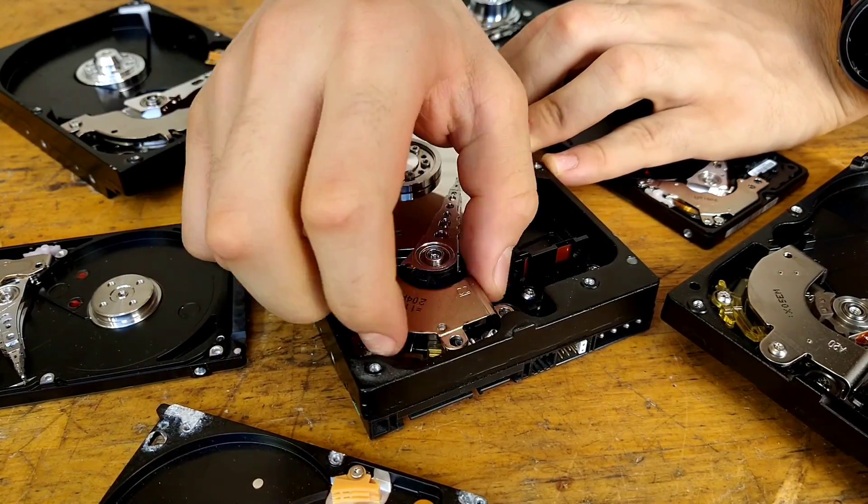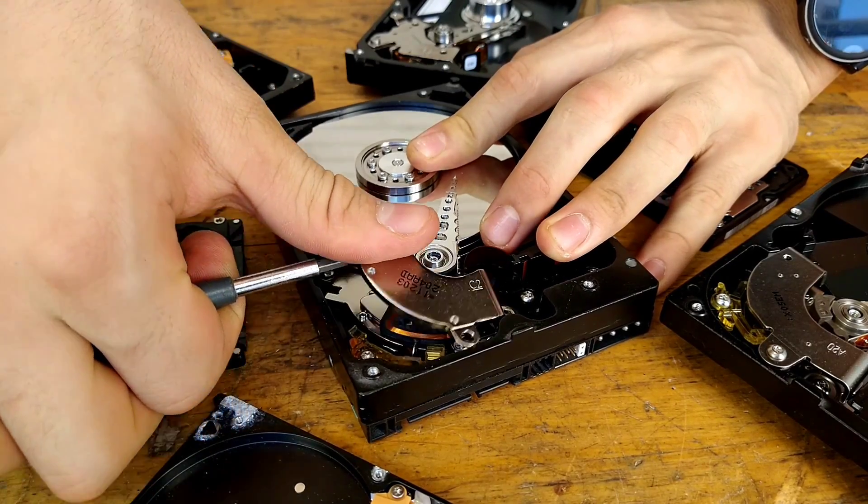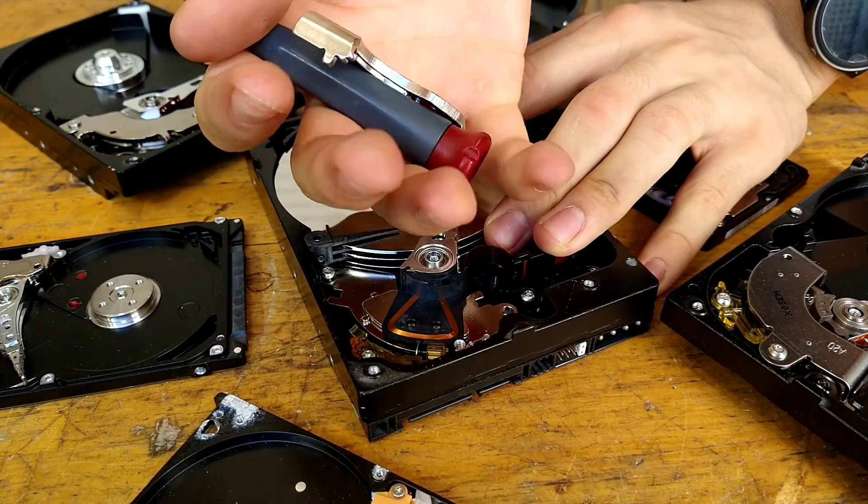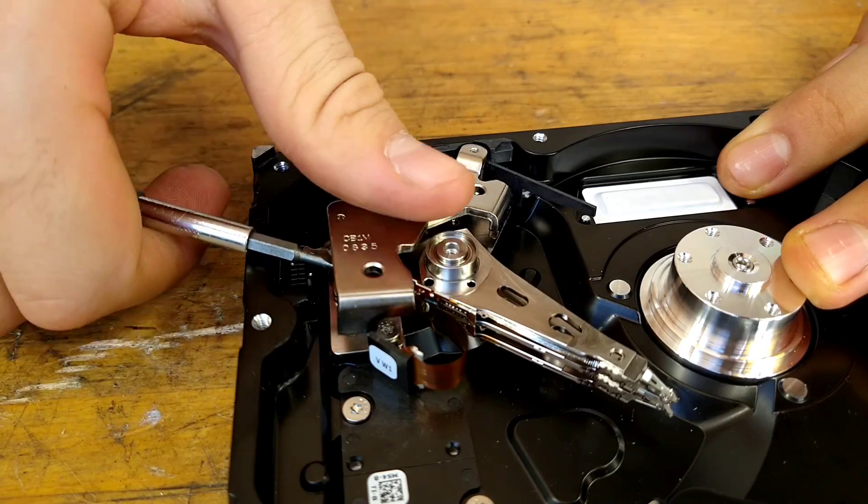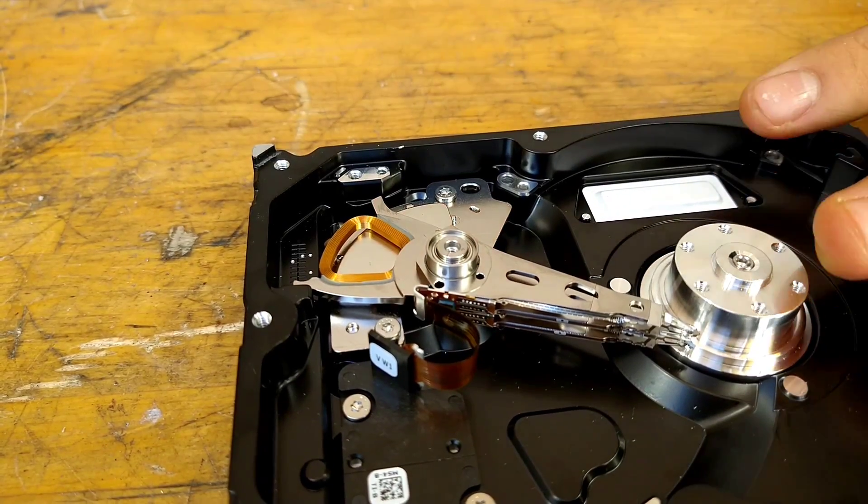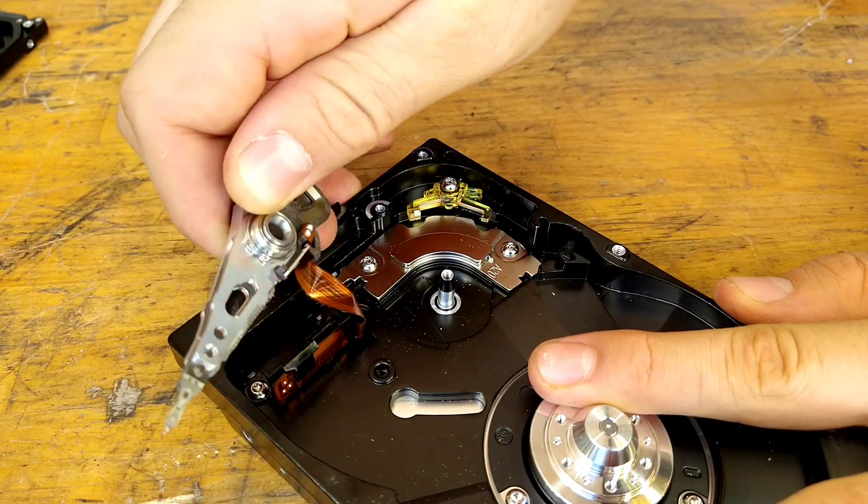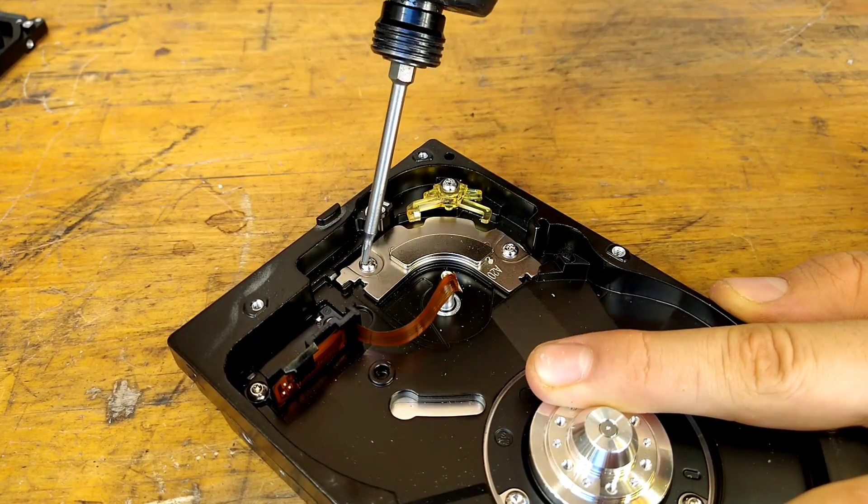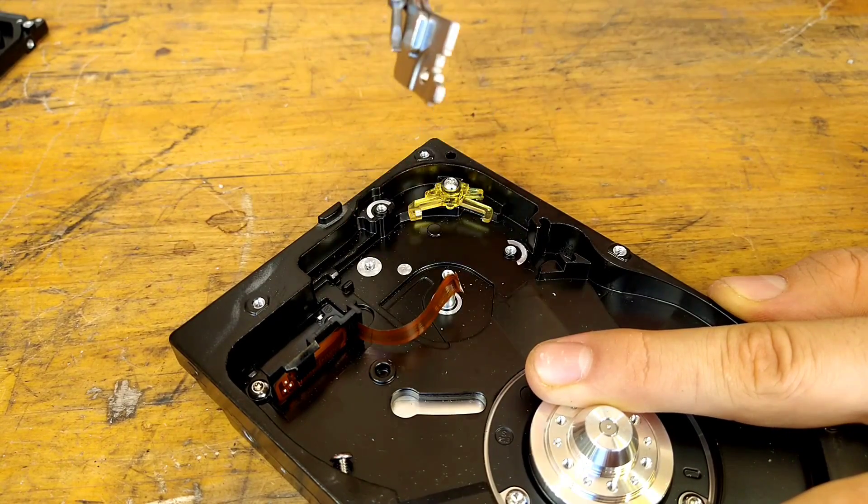The size and thickness of these magnets vary and therefore the strength as well. Hard drives from laptops tend to be much thinner and some even have only one magnet, so if you happen to open one and don't find what you need, keep looking. These are always stronger than any others you'll find considering their size.